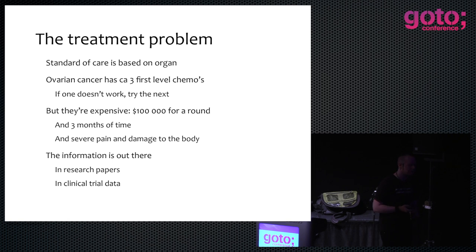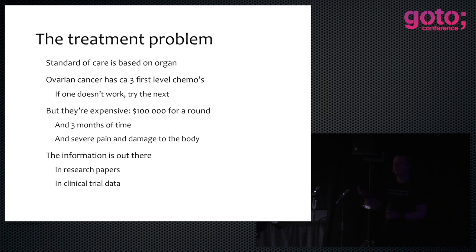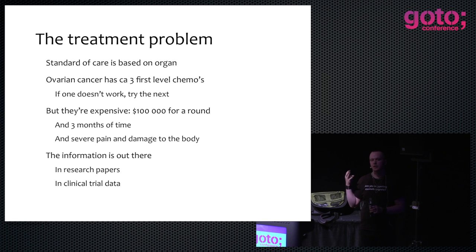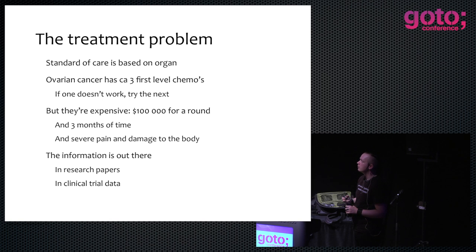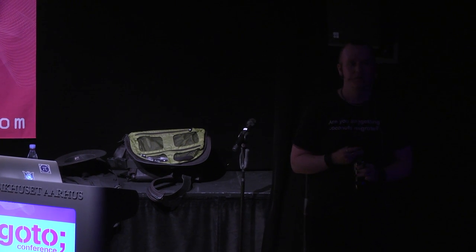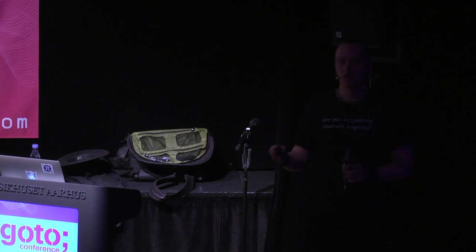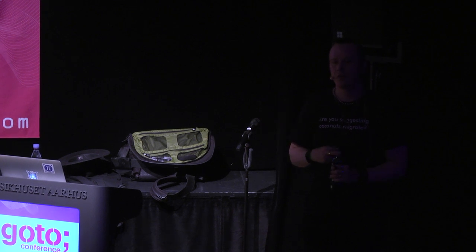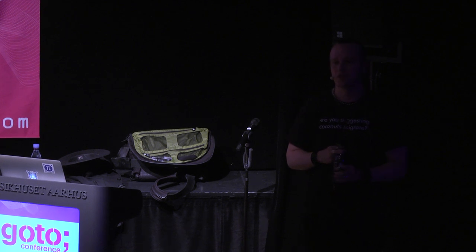The information is out there. There are a lot of research papers that have done a lot of research on which chemos work on which genetic markers. But connecting that up with what mutations a specific individual actually has has not been done so far. Research papers and clinical trial data have this information. So this is really the problem statement — this is the information after we'd learned enough molecular biology to understand what all this stuff meant.